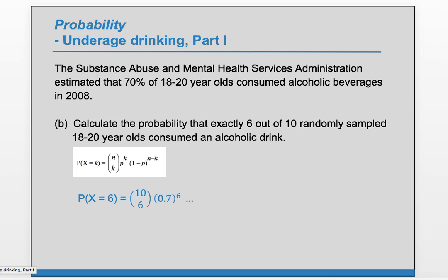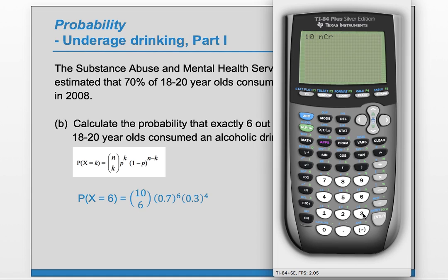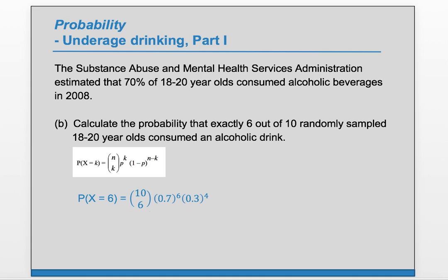Then we have 1 minus p, which is 0.3, raised to n minus k — so 0.3 raised to the 4. To evaluate this, we can grab a calculator. For 10 choose 6, enter 10, then go to Math, over to PRB (probability), and choose number 3, which is nCr. We want 10 choose 6, which gives us 210 — that's 210 combinations to have exactly 6 of one type and 4 of the other within a group of 10. So we have 210 times 0.7 to the 6 times 0.3 to the 4, and we get 0.2.